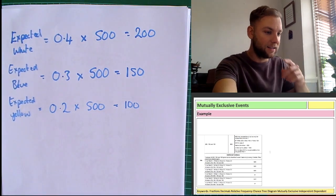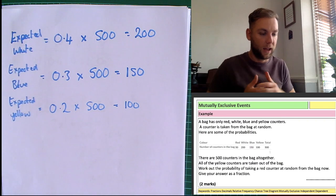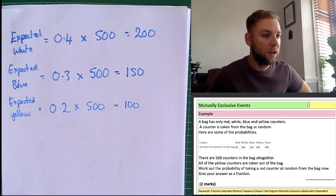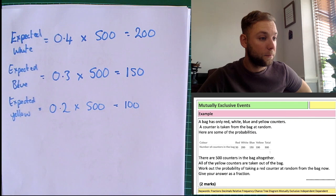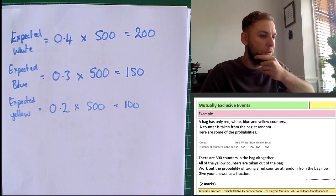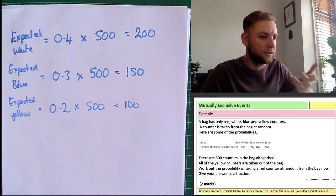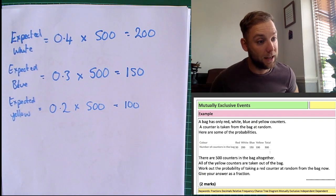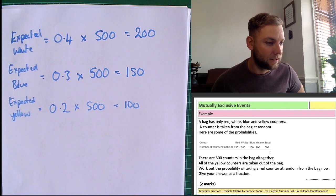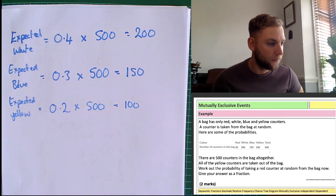One final example. A bag has red, white, blue, and yellow counters — 500 counters in the bag altogether. All the yellow counters are taken out of the bag. Work out the probability of taking a red counter at random from the bag now, giving your answer as a fraction. We need to take the yellow away from the total as well.